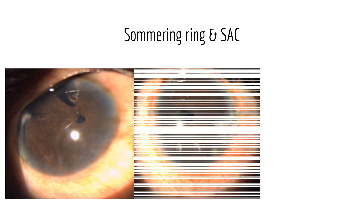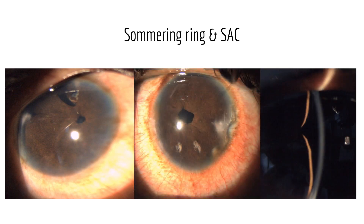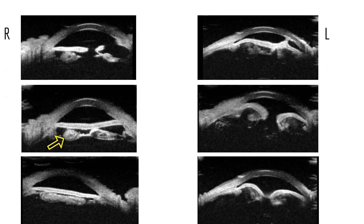Soemmering's ring is a complication encountered frequently after congenital cataract surgery due to proliferation of lens epithelial cells. This aphakic young male was referred to rule out iris bombé. UBM showed extensive Soemmering's ring-induced secondary angle closure with high IOP, more in the left eye. Laser PI has a limited role in these eyes as there is no pupillary block. Surgical PI with Soemmering's ring extraction can be done in refractory cases.